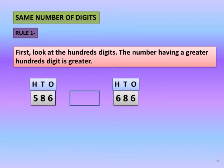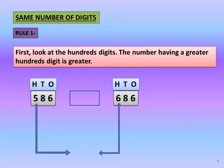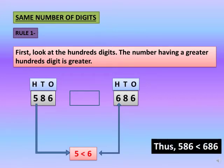In 586 the digit at hundreds place is 5, and in 686 the digit at hundreds place is 6. As we all know, 6 is greater than 5, so the number 686 is greater than 586.